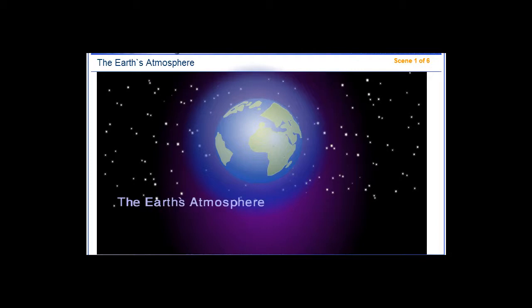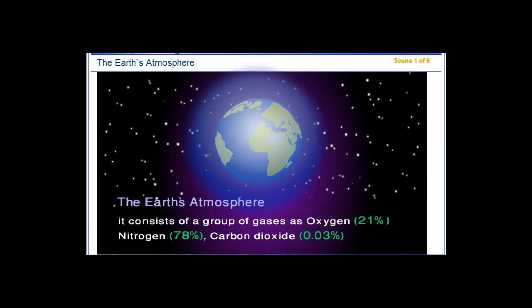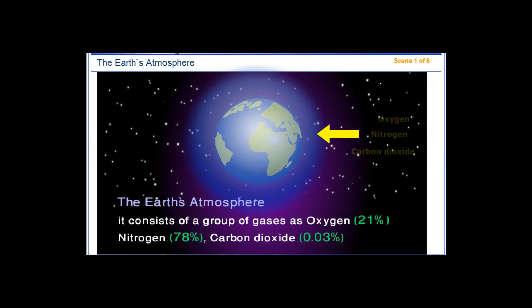The Earth's Atmosphere consists of a group of gases, such as oxygen at 21%, nitrogen at 78%, and carbon dioxide at 0.03%.